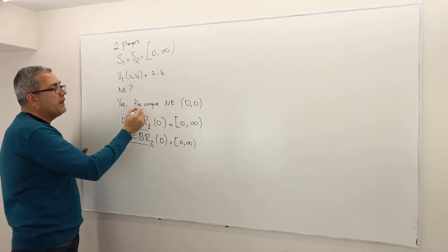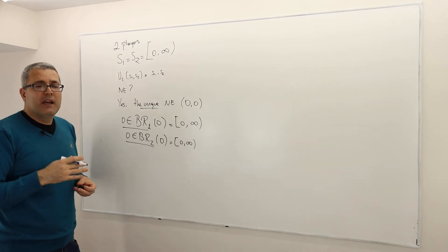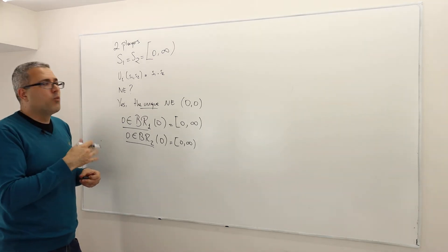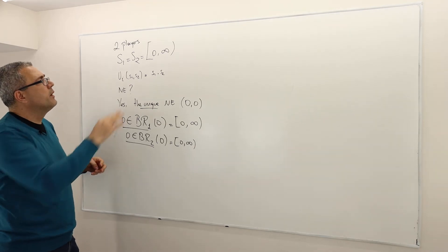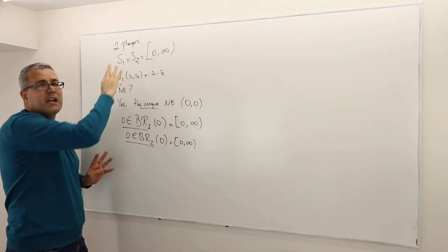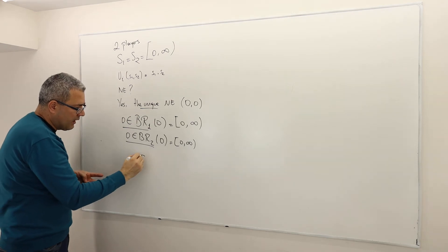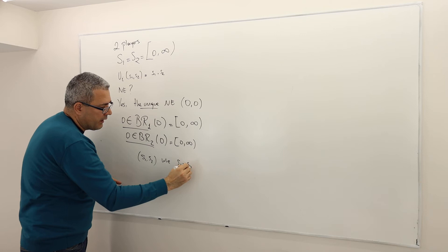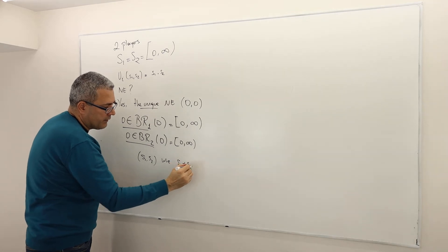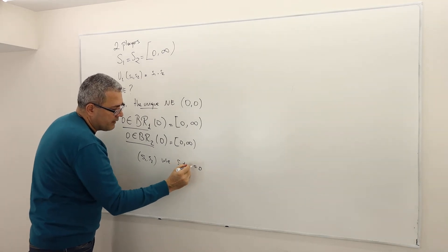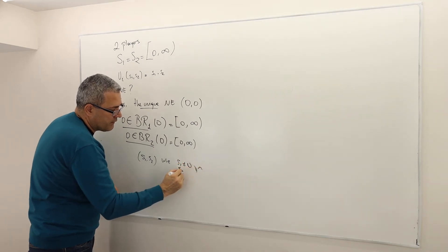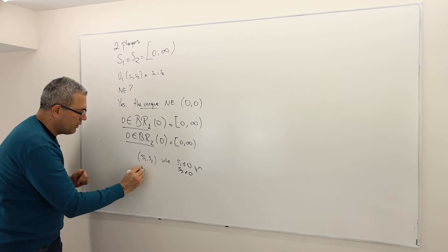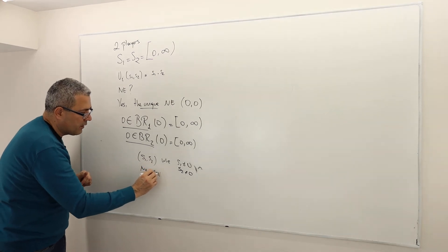Why is it unique? Exactly for the reason that there's no Nash equilibrium when zero is not included in the strategy set. Any positive number profile (S1, S2) where S1 and S2 are different from zero — there's no such Nash equilibrium of this form.